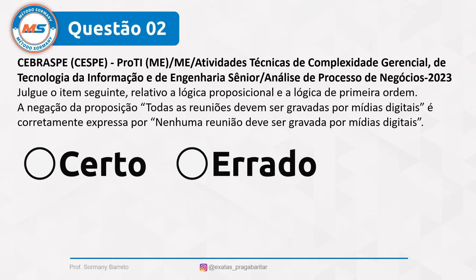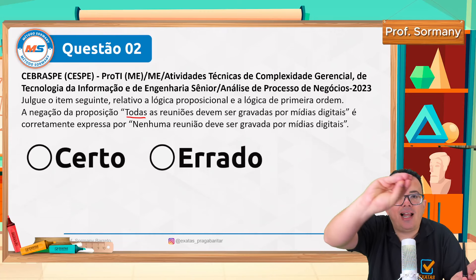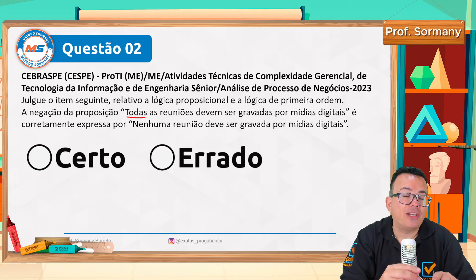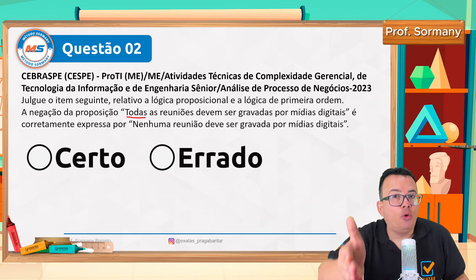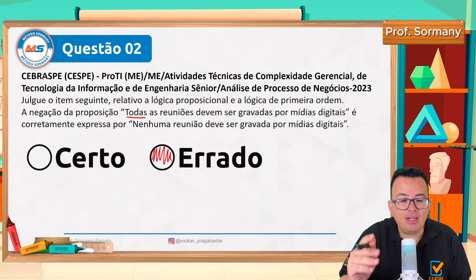Questão 2: julgue o item relativo à lógica proposicional e à lógica de primeira ordem. 'A negação da proposição: todas as reuniões devem ser gravadas por mídias digitais, é corretamente expressa por: nenhuma reunião deve ser gravada por mídias digitais.' Quem é meu aluno já sabe — eu não posso negar o todo com o todo, não posso negar o muito com o muito. Esse item já está errado.